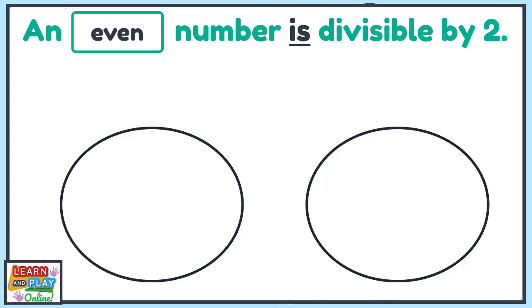And since we already know that the number 1 is an odd number, let's try number 2. If we had 2 stars to share into 2 groups, what do you think will happen?